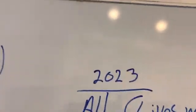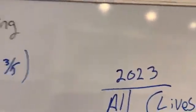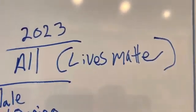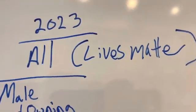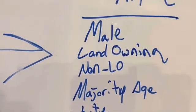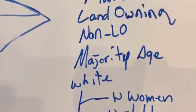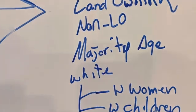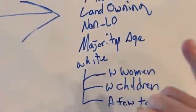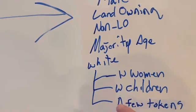So if we could look at 2023 and find the all group today, we could see how much racial progress we've made. Well, that's not complicated. We have Black Lives Matter, and then the people vehemently opposed to that. They keep saying all lives matter, and to them, all in 2023 means male, landowning, non-landowning, over the majority age, and white with two subgroups, white women and white children, and a few tokens. That's it.